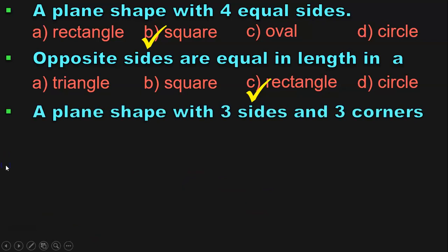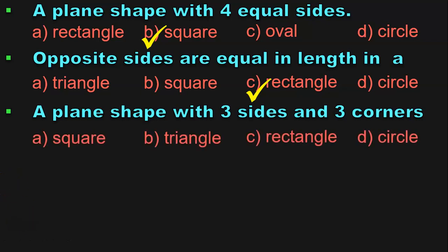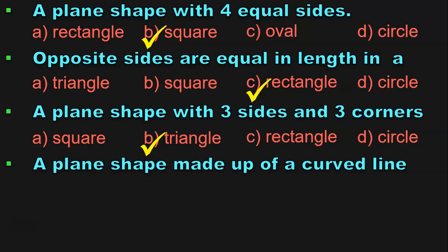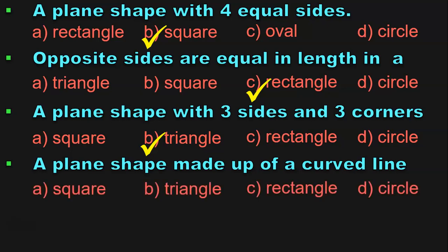A plane shape with three sides and three corners — the correct answer is a triangle. A plane shape made up of a curved line — the correct answer is a circle. The remaining three shapes — square, triangle and rectangle — are made up of straight lines.